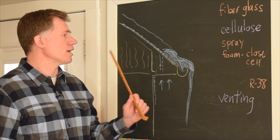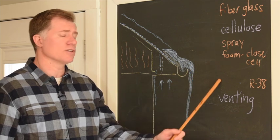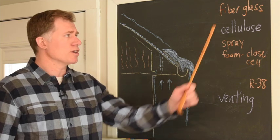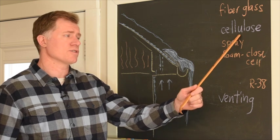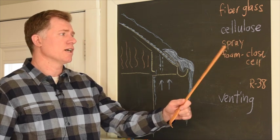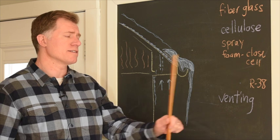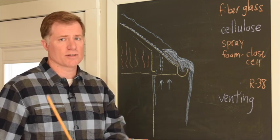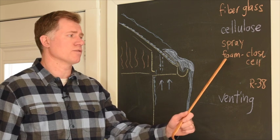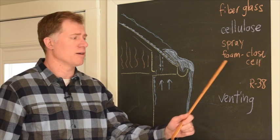Starting with fiberglass, which you can get at a home store and do yourself, you can do cellulose yourself as well, though it's a little more involved. Spray foam closed cell is not something you're going to do yourself, but that's the Cadillac of insulation. That's going to give you the highest R-38 rating for the smallest amount of space taken up.